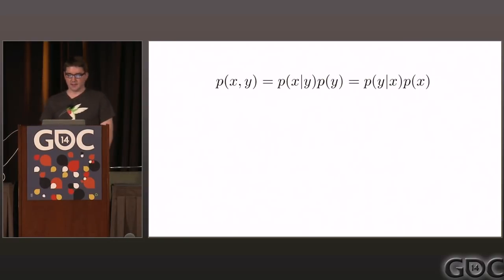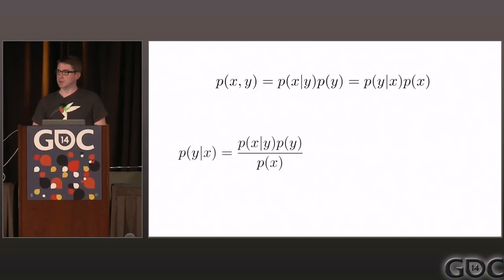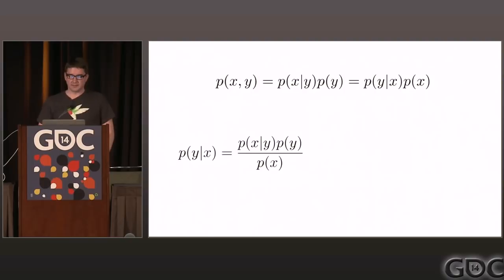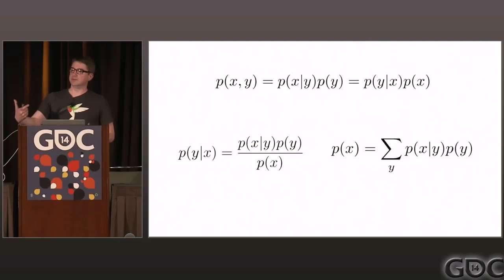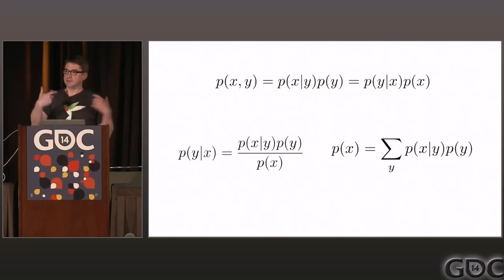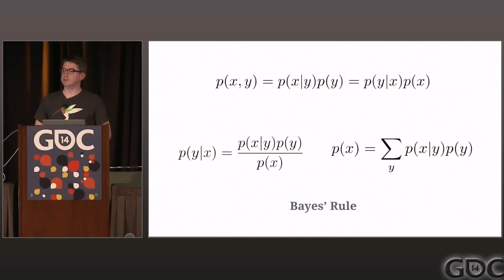We do a little bit of math and end up with Bayes' rule. The probability of Y given X equals the probability of X given Y, times the probability of Y, divided by the probability of X. We've managed to figure out a way to relate the frequentist view of the world with the Bayesian view — relating the probability of the model given the data to the probability of the data given the model. That's exactly what we want to do. Bayesian statistics and Bayesian inference is essentially all about this.